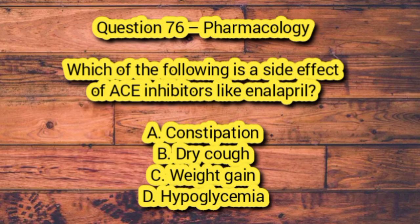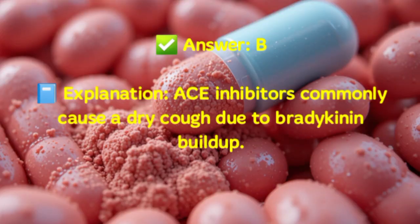Question 76 – Pharmacology. Which of the following is a side effect of ACE inhibitors like enalapril? A. Constipation. B. Dry cough. C. Weight gain. D. Hypoglycemia. Answer: B. Explanation: ACE inhibitors commonly cause a dry cough due to bradykinin buildup.